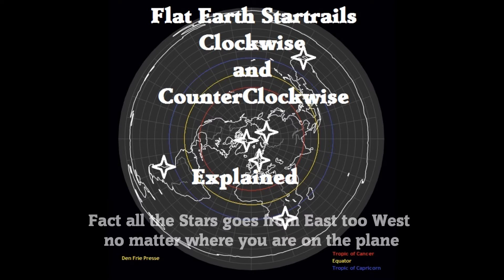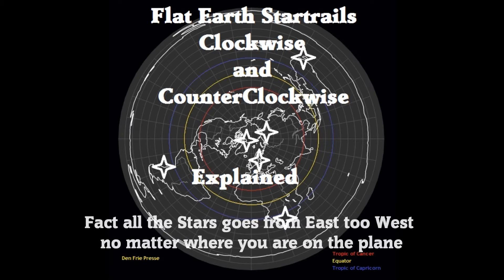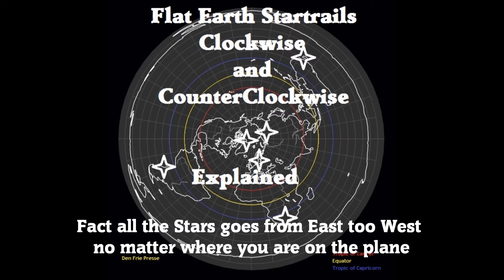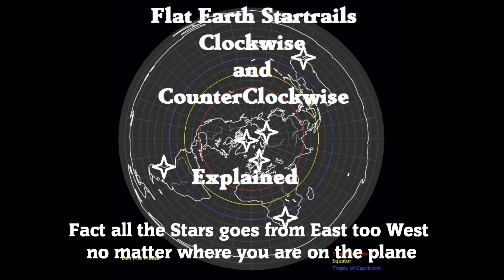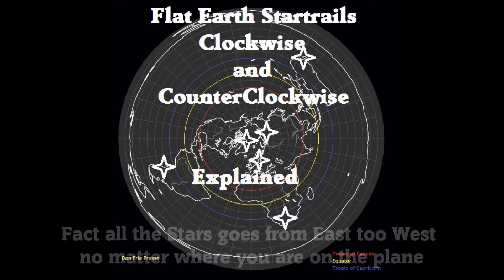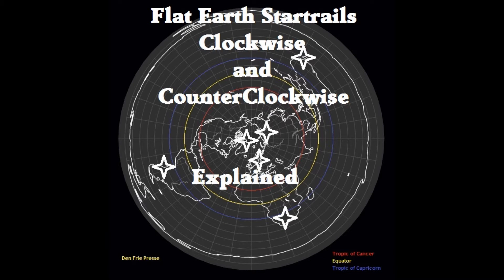Welcome ladies and gentlemen to this video explanation about the star trails on our flat earth plane. They're going both clockwise and counterclockwise, and this is confusing for a lot of people. If you are very close to the center point, you will not be able to make them go clockwise.